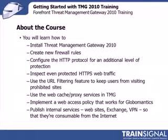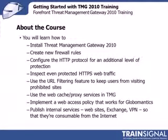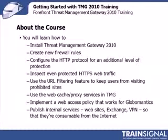You'll learn how to implement a web access policy that makes sense given Globamantics' business needs. And you'll learn how to publish internal services — for example, websites, Exchange, VPNs — so that they're consumable from internet-based users. There's a whole variety of internet-based users out there: some are the public such as Globamantics customers or partners, and some are Globamantics employees themselves who may work from home offices or be on the road as part of a mobile sales force and need remote access. There are different use cases around how you'll use the different Threat Management Gateway technologies to support these different classifications of users.